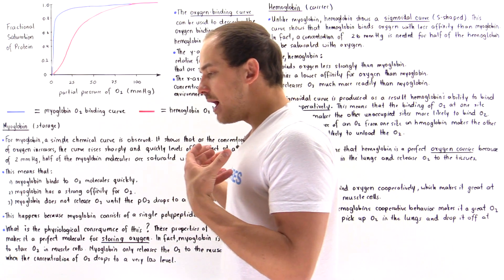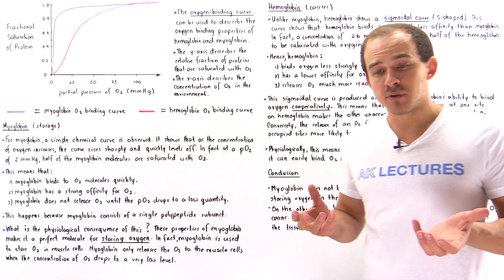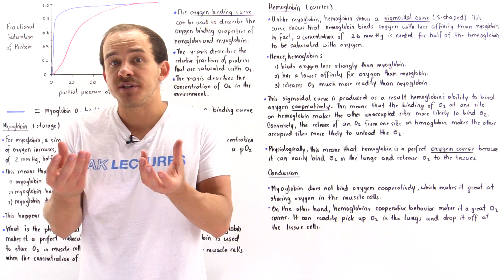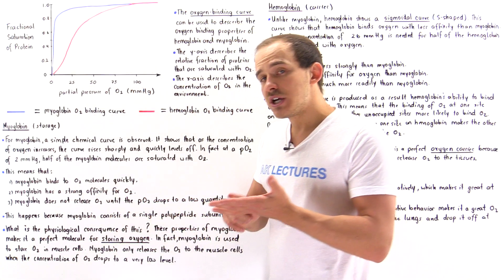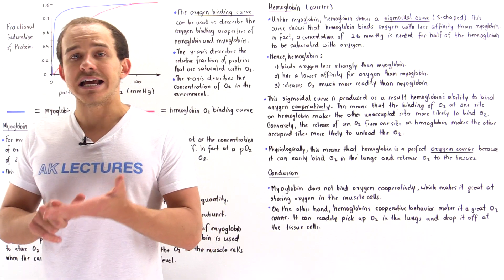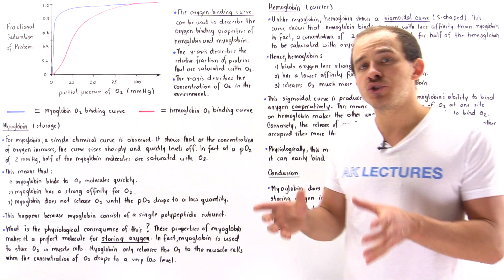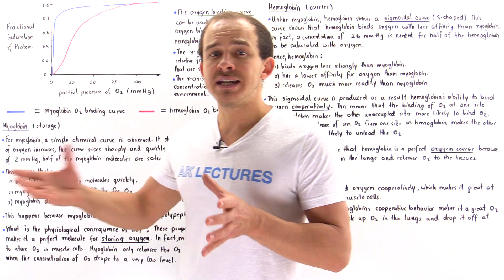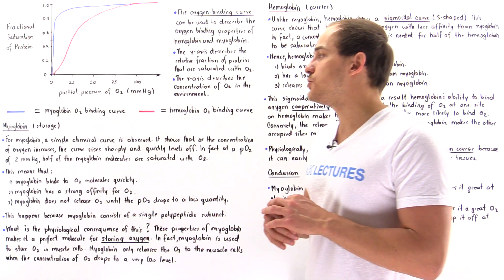If hemoglobin can bind more oxygen molecules, why do we need myoglobin molecules in the first place? Why does our body need to use two different proteins to carry out the same function of bringing oxygen to the cell? Because these two proteins have slightly different structures, they have slightly different properties and therefore slightly different functions. Myoglobin is used to store the oxygen, while hemoglobin is used to bring the oxygen continually from the lungs to the tissues of our body.